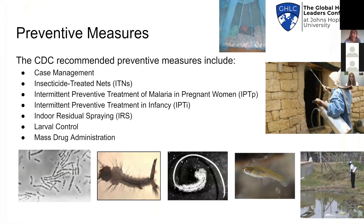Prevention is better than cure, especially in this case, and there are many CDC-recommended preventive measures. Most involve blocking transmission between the two hosts, including insecticide-treated nets, indoor residual spraying, and larva control. We also have mass drug administrations where a population is given a drug as prophylaxis. Organizations implementing these measures in endemic regions include the WHO Malaria Elimination Program started in 2016 and the Bill and Melinda Gates Foundation's approach to malaria elimination.